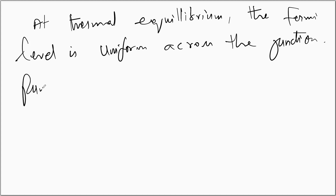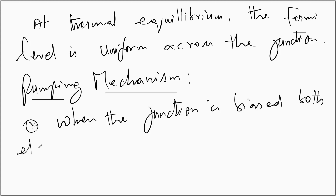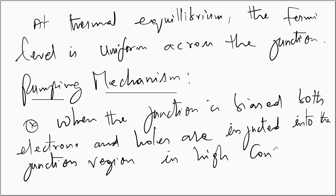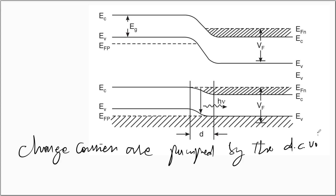When the junction is forward biased, both electrons and holes are injected into the junction region in high concentrations. The charge carriers are pumped by the DC voltage. When the diode current reaches a threshold value, increasing the bias further causes the carrier concentration in the junction region to rise to a very high value.